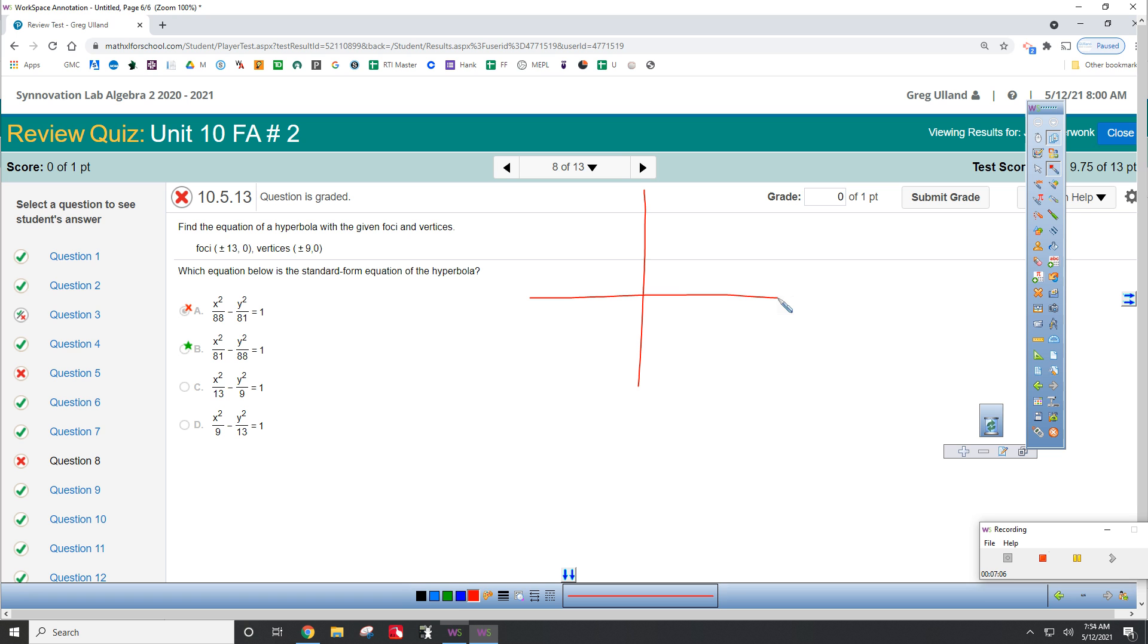So, here, you've got the foci. Well, the vertices are at 9 and negative 9, comma 0. Then, it says the foci are at 13 and negative 13, comma 0. Well, the foci of a hyperbola is always inside of it. So, then, you know that this thing is going this direction and that direction. So, when it's opening up this way, the x is the positive value and the y is the negative value. So, you did have that correct. That was good.